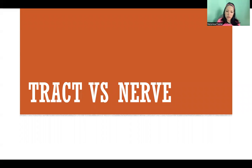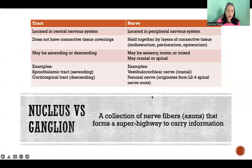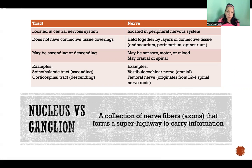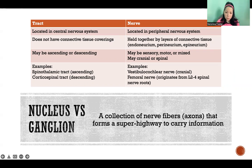In this video I'm going to discuss the similarities and differences between a tract and a nerve. Both are collections of nerve fibers or axons that form essentially superhighways to carry information. The main difference is where they're located. A tract is located in the central nervous system, whereas a nerve is located in the peripheral nervous system. They're essentially the same thing — bundles of axons projected from neurons, grouped together and traveling to similar locations.